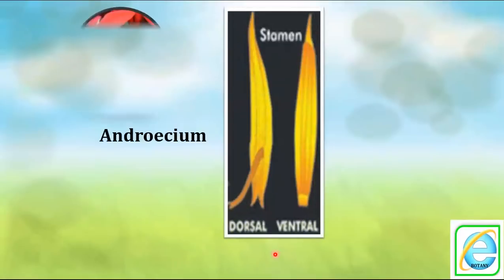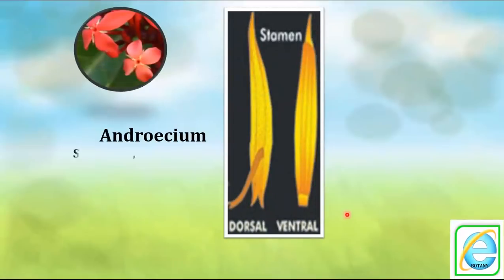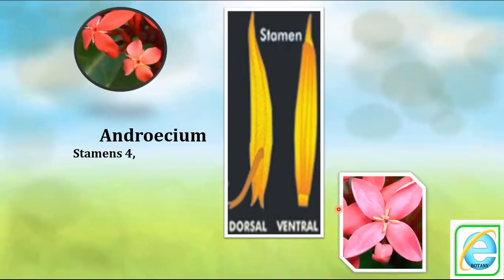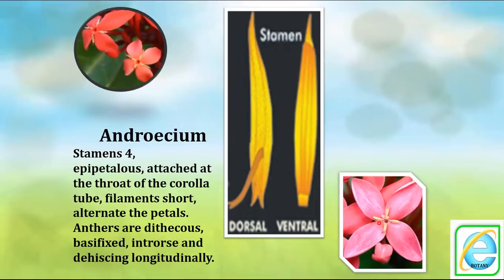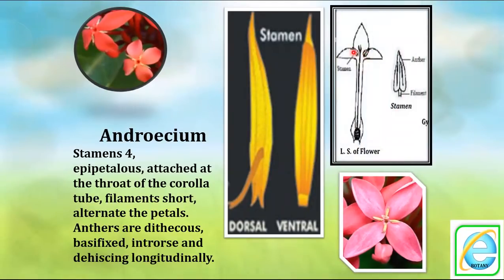Androecium: four stamens, epipetalous — stamens attached to the petals and present at the throat of the corolla tube. Filaments are very short. The anther is dithecal — two lobes present — introrse, turning inward, and dehiscent longitudinally via the connective.